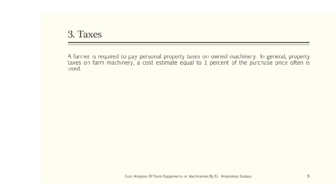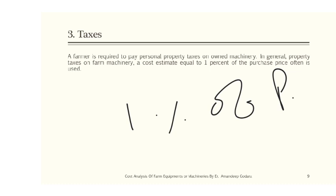The third type of fixed cost is taxes. Although agriculture equipment is generally exempted from personal property tax, there are certain machineries or power sources where registration is required, and therefore personal property tax is imposed on those equipments. It is generally taken as one percent of the purchase price of the farm machinery.